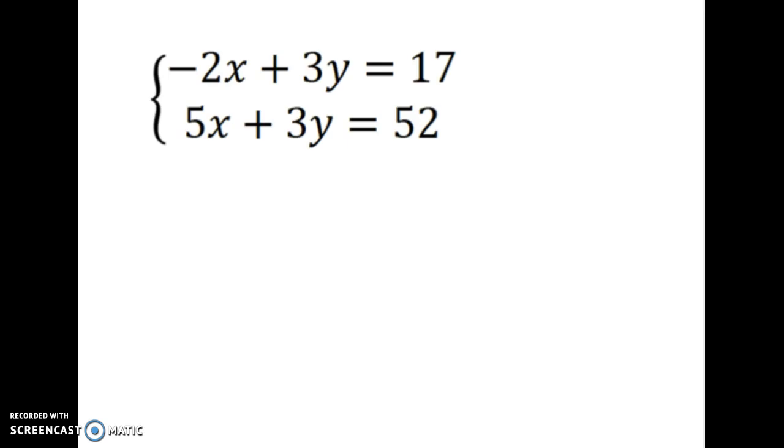Second, is there a pair of opposites? Well, no, there's not in this case. So we need to multiply either the first equation or the second by a strategic number. Since 3y and 3y are really similar, it's really easy to make them a pair of opposites if you choose to multiply one of the equations by negative 1. I'm going to choose to multiply the first equation by negative 1.